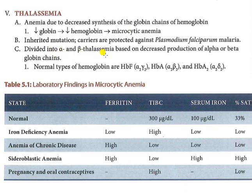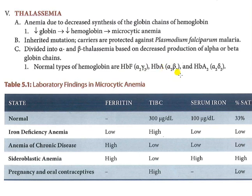Thalassemia is divided into alpha and beta thalassemia. If you have a problem with alpha thalassemia, or if you have a problem with beta thalassemia, these are the two main categories.